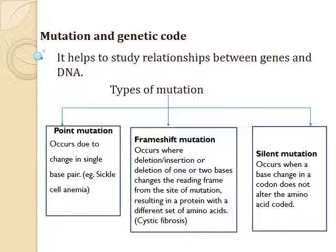The third type is silent mutation. It occurs when a base change in a codon does not alter the amino acid coded. For example, if the codon AAA is altered to become AAG, the same amino acid lysine will still be incorporated into the peptide chain.